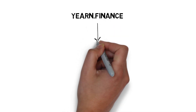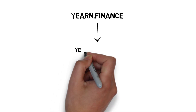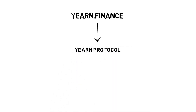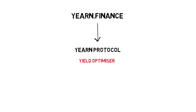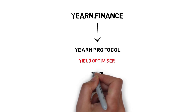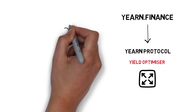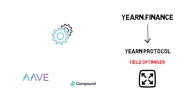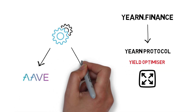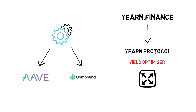The main element of Yearn Finance is the Yearn protocol. The Yearn protocol, in essence, is a yield optimizer that focuses on maximizing DeFi capabilities by automatically switching between different lending protocols. Before we explain the mechanism of the protocol itself, let's see how Yearn came into existence.